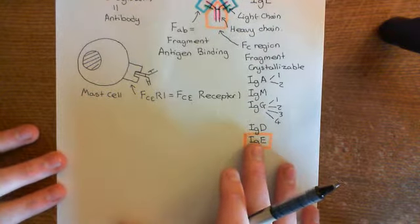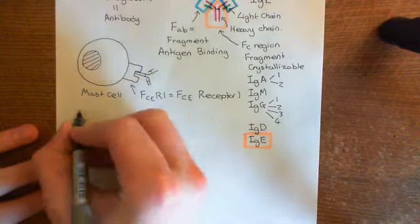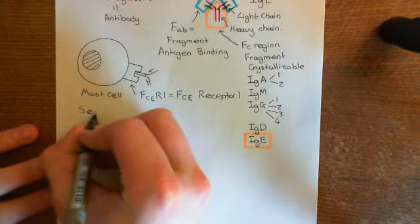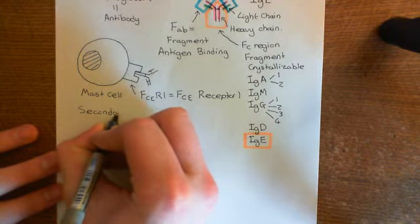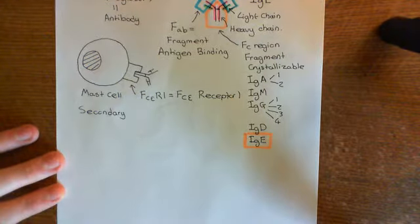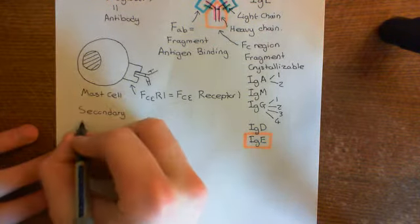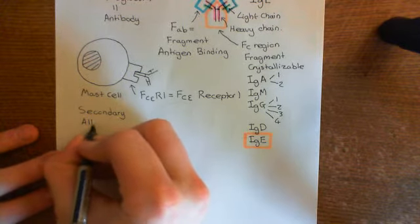Now what's going to happen is you're going to get your secondary exposure to the allergen. You breathe in the allergen again whilst the IgE is still on the surface of the mast cells — re-exposure within a few months. So this is secondary allergen exposure.